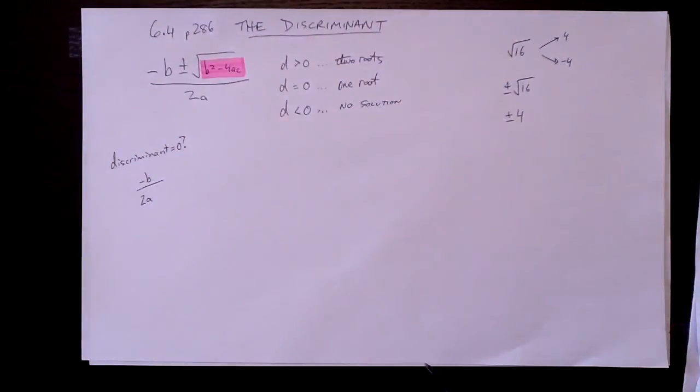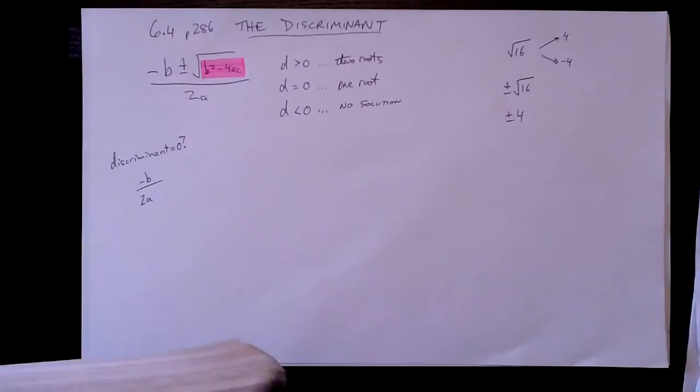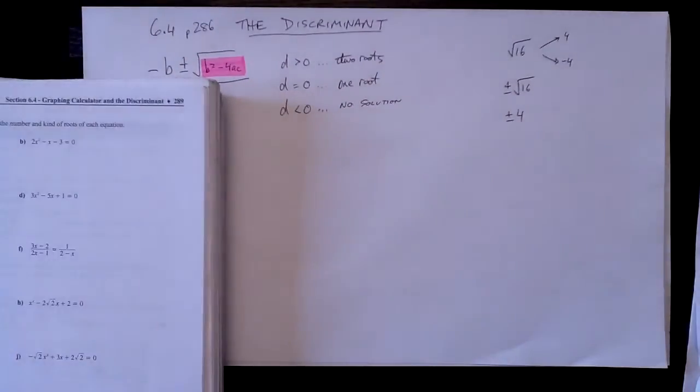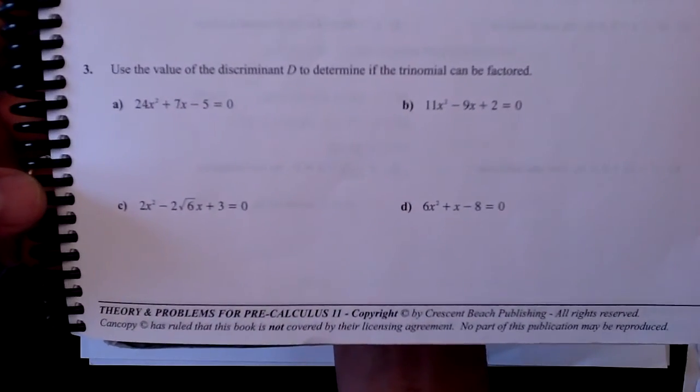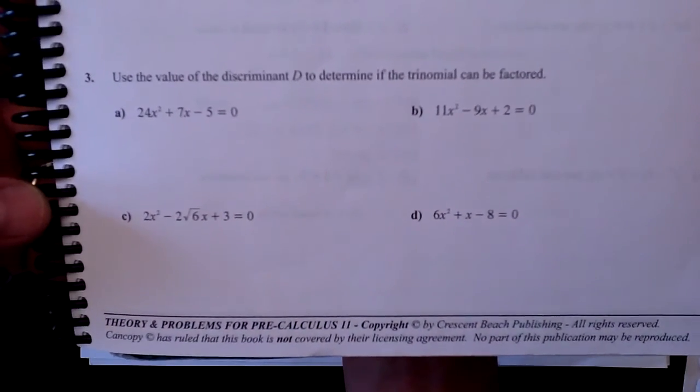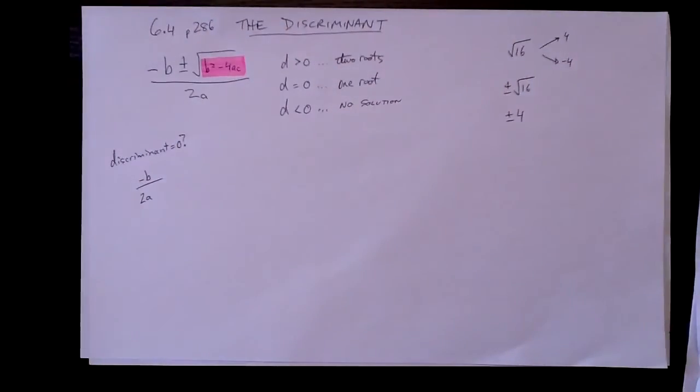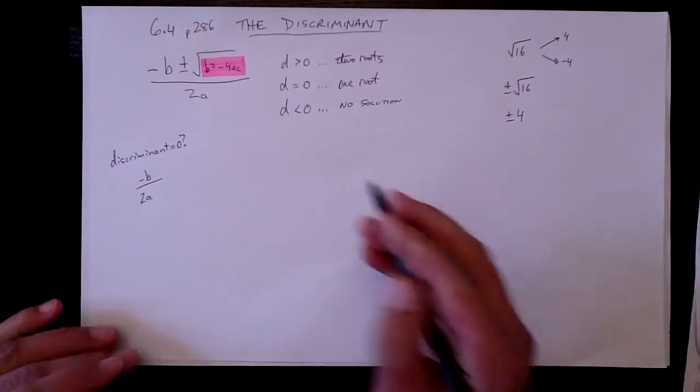Well, that doesn't tell you anything about factoring. But yet, somehow, for some reason, the wizards who wrote this book decided to give you this question, which will be the subject of the next video, that says, use the value of the discriminant to determine if the trinomial can be factored. Well, it doesn't tell you. It doesn't give you the answer, but I'll give you the answer now.